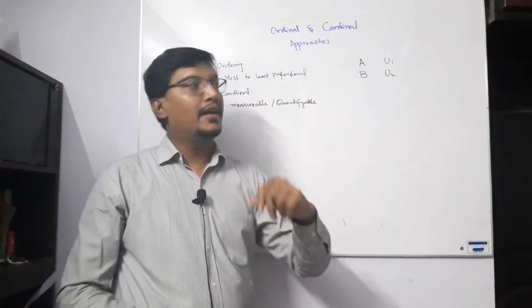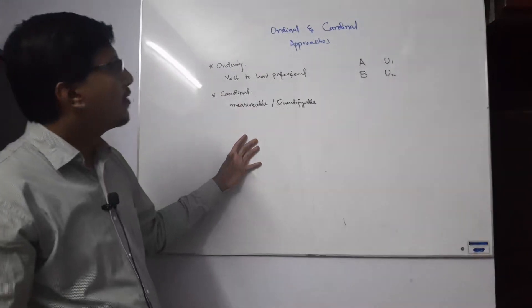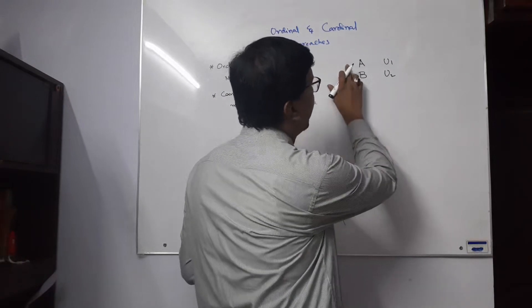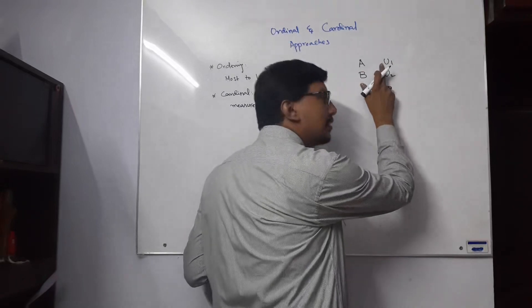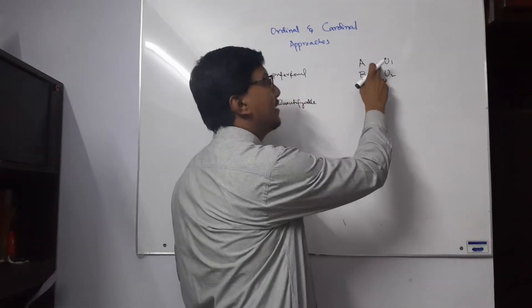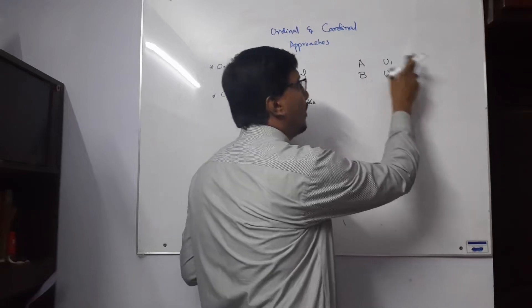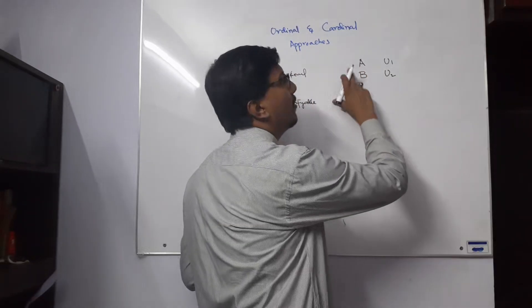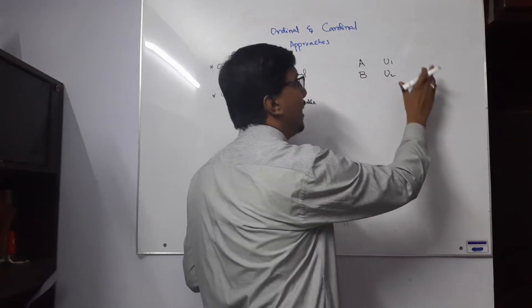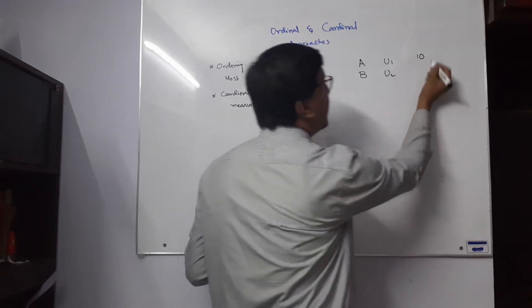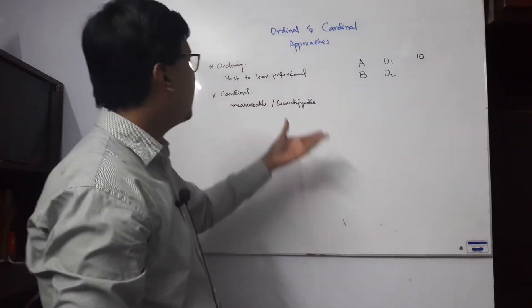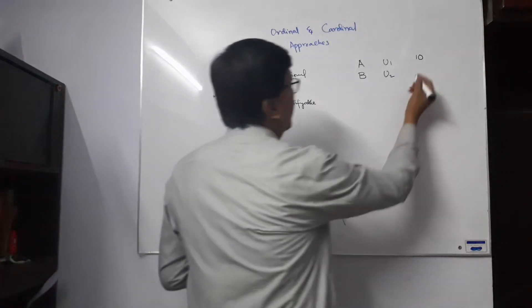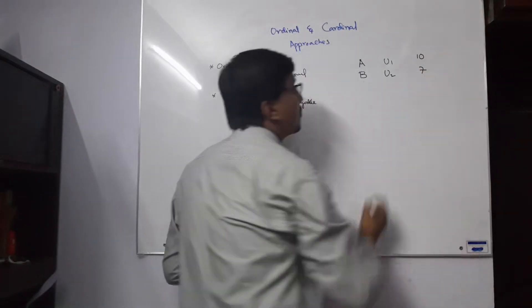So that means from the ordinal approach, Mr. A is using commodity X and giving the utility rank. By the cardinal approach, we will be trying to find out how much utility Mr. A received after using commodity X in the shape of a number, in the shape of quantity, in the shape of measurement. B says he received 7.